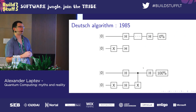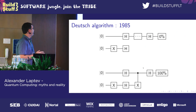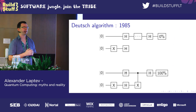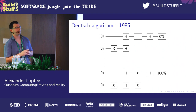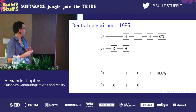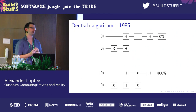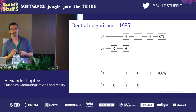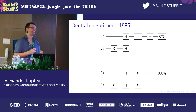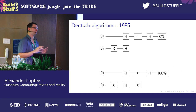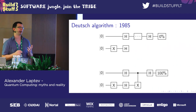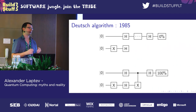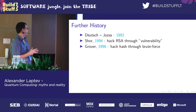Deutsch didn't give up on his idea, and in seven years, in 1992, he and another scientist provided the next algorithm. This algorithm gave an asymptotical speedup of N times. It was again a fully artificial function where we had to determine if it was constant or not, but a classical computer needed N measurements depending on the number of arguments, while the quantum computer did everything in a single operation. After that there was an intermediate algorithm called Simon's, which we'll skip.